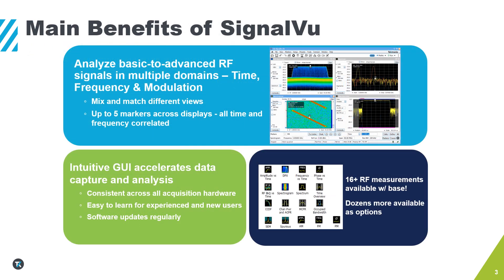There are three key benefits of SignalView. First, with the software, you can analyze complex RF signals in multiple domains, including time, frequency, and modulation domains. This means you can mix and match different views and utilize markers across displays, all time and frequency correlated with each other. This dramatically speeds up the process of getting to root cause on signal anomalies.